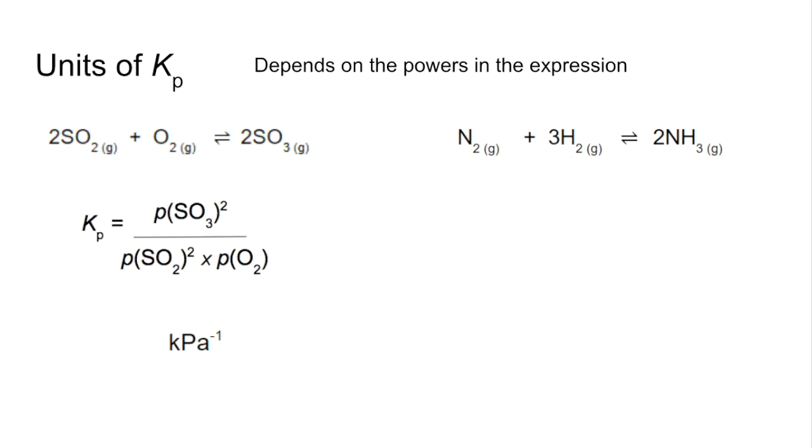And the Haber process, there's the Kp expression again. Units would be Kp squared over Kp to the power of 4. Cancels down to 1 over Kp squared, so Kp to the minus 2 on the top.